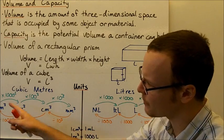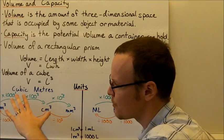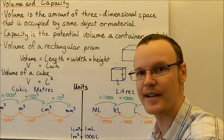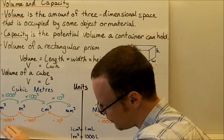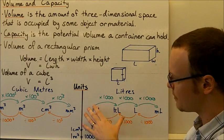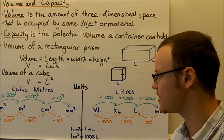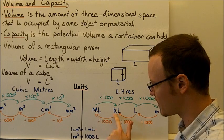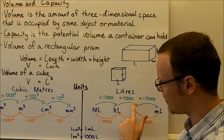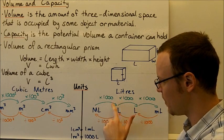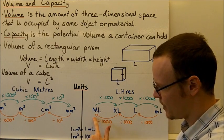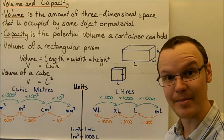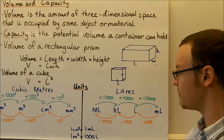When converting between units, if we're converting cubic units, we must multiply by the cubic equivalent, because we're multiplying or dividing in three dimensions, not just one. But for litres, it's a regular conversion: one megalitre is a million litres, one kilolitre is a thousand litres. So going from litres to megalitres, divide by a thousand and divide by a thousand again — the same as dividing by one million.